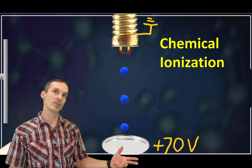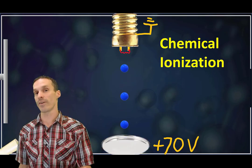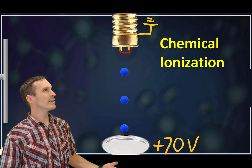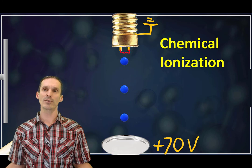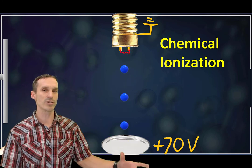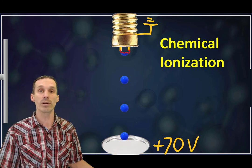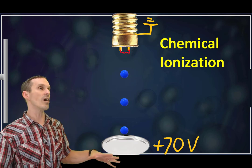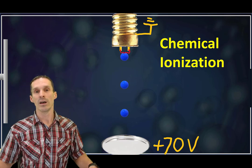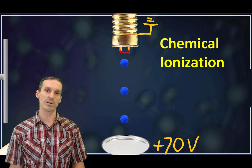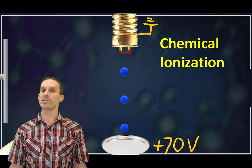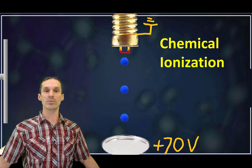Electron ionization has the benefit of generating fragments, and we use those fragments to identify compounds. But at the same time, that could be a disadvantage, especially when you've broken the molecule down so much that you actually don't even know what the original mass is supposed to be. What we want are what we would call softer ionization techniques, a little bit less energy, a little bit less fragmentation.